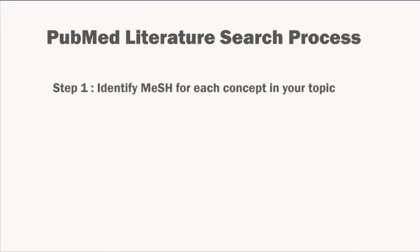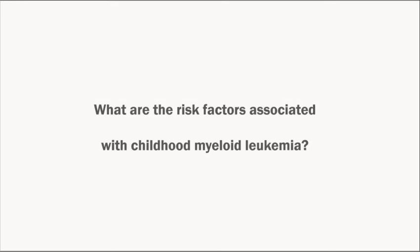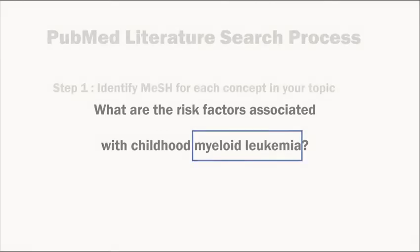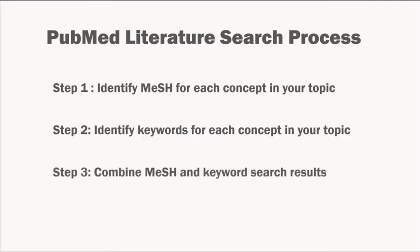When conducting a thorough literature search in PubMed, the first step is to identify and search MeSH for each concept in your research question. In our previous video, we searched the MeSH for the first concept in our research question, myeloid leukemia. The next step is to search for keywords related to that concept. The third step is to combine the results of the MeSH search and the keyword search to retrieve a list of articles that is both precise and complete.